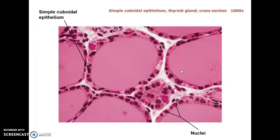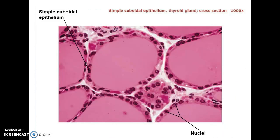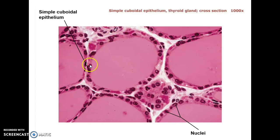This is simple cuboidal epithelium in a gland — specifically in the thyroid gland. This is the tubule of the gland, and these are the cuboidal cells. Not really exactly square shaped — they're rounded cells around the tubule that would secrete the thyroid hormone or the products that the gland is secreting into these tubules.